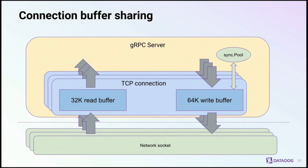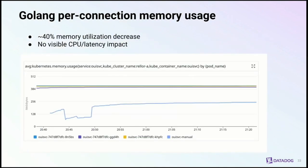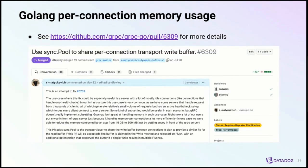We worked with the gRPC team and introduced an optional mechanism that allows sharing buffers between connections using sync.Pool — a Go abstraction for sharing objects between concurrent goroutines — along with logic to release buffers and make them available to other connections when necessary. After testing this feature on one of our gRPC servers, we saw a 40% memory decrease with no visible CPU impact. There is a link to the pull request with benchmark results if you want to learn more.